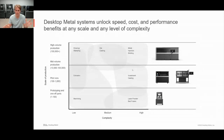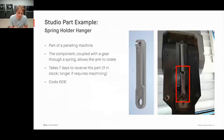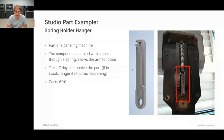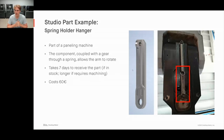Let me show a real-world example from each system. The first is a spring holder hanger from Prezioso Francesco in Italy — a stamping and sheet metal company. It's part of a paneling machine, coupled with a gear through a spring. Currently they were buying this part from a vendor who was having it machined — taking about seven days to receive, even longer if custom machined — at a cost of about 60 euros, with some failure issues from tear-out stress in the geometry.